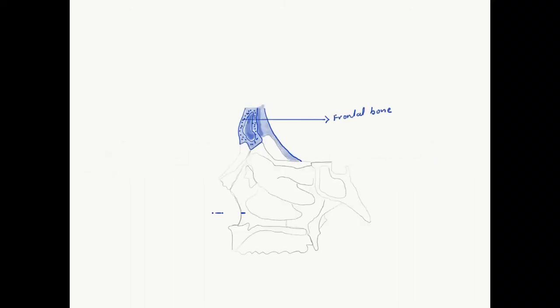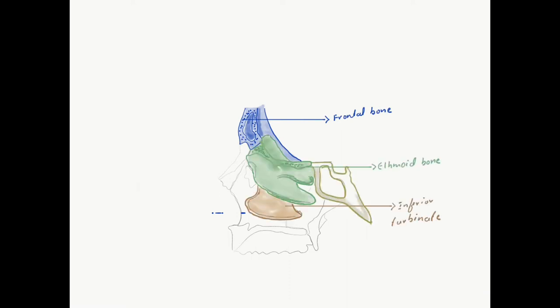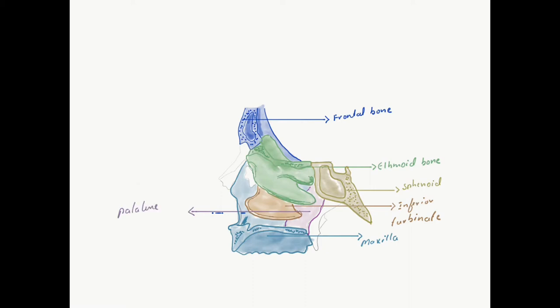The lateral wall of the nasal cavity is actually formed by eight bones: the frontal bone, ethmoid bone, inferior turbinate, sphenoid bone, maxillary bone, palatine bone, nasal bone, and some contribution is also seen from the lacrimal bone.